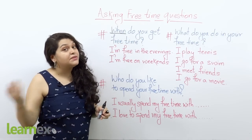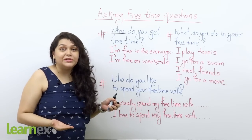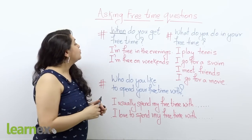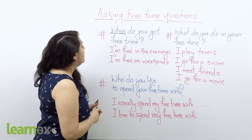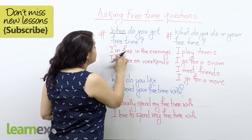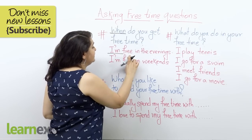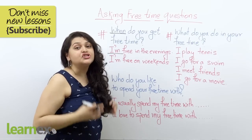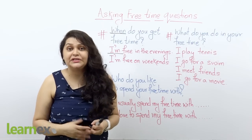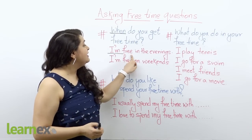Your answer will vary according to your situation. Some people get free time in the morning, some people get only evenings. One answer is: 'I am free in the evenings.' The apostrophe form 'I'm' is often used in English, so you can also say 'I'm free in the evenings.'